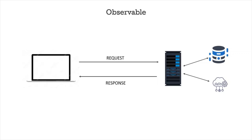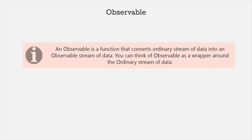The next difference is that a promise is native to JavaScript — it is provided by the JavaScript language. But an observable is not a native feature of Angular or JavaScript; it is provided by another JavaScript library called RxJS. So we can say that an observable is a function that converts an ordinary stream of data into an observable stream of data. You can think of an observable as a wrapper around the ordinary stream of data — in simple words, it streams the data in packets or chunks; it does not send all the data at once.